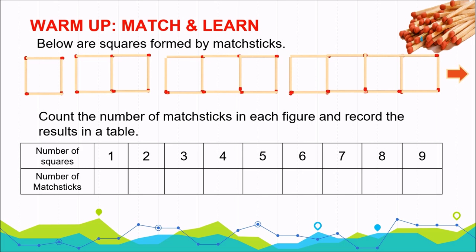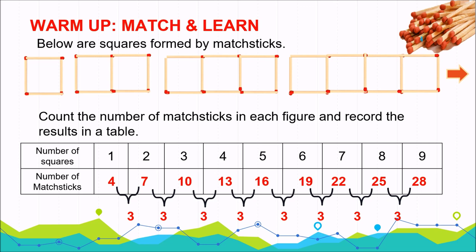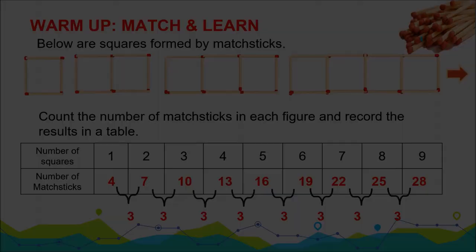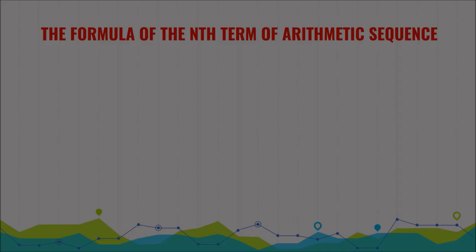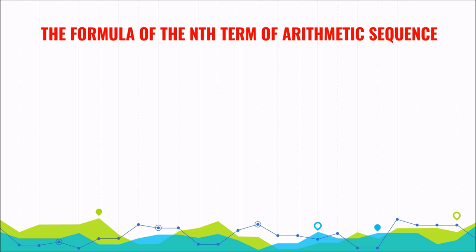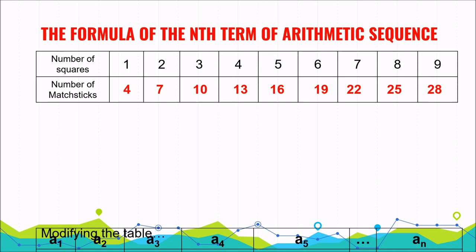How did you find the number of matchsticks? It depends on the number of squares. What is the difference between any two consecutive number of squares? If you notice a difference of 3, that is correct — three matchsticks are being added per additional square. The number of matchsticks forms an arithmetic sequence with a common difference of 3.